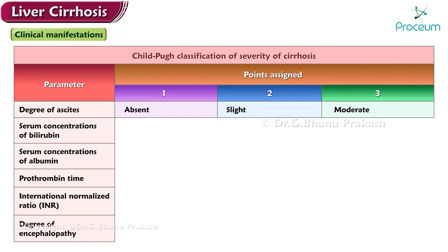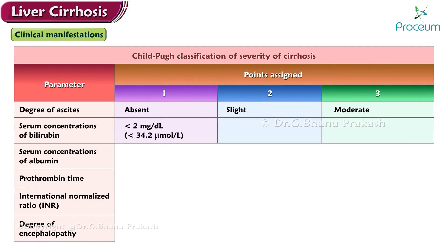For the bilirubin parameter: one point is assigned for less than 2 mg/dL (or less than 34.2 µmol/L); two points for 2 to 3 mg/dL (or 34.2 to 51.3 µmol/L); and three points for more than 3 mg/dL (or more than 51.3 µmol/L).